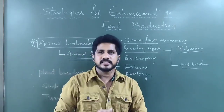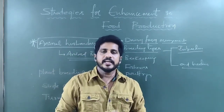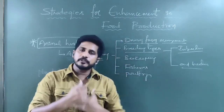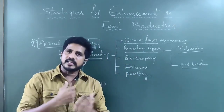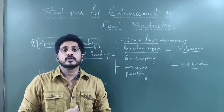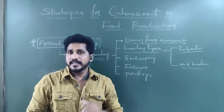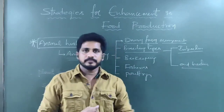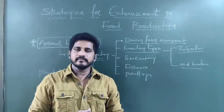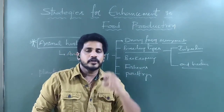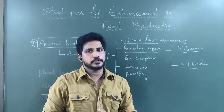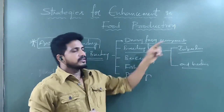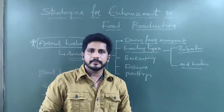In inbreeding, homozygosity is increased — the same type of germplasm qualities accumulate. This is also called inbreeding depression, in which production is reduced. That is the main minus point of inbreeding.